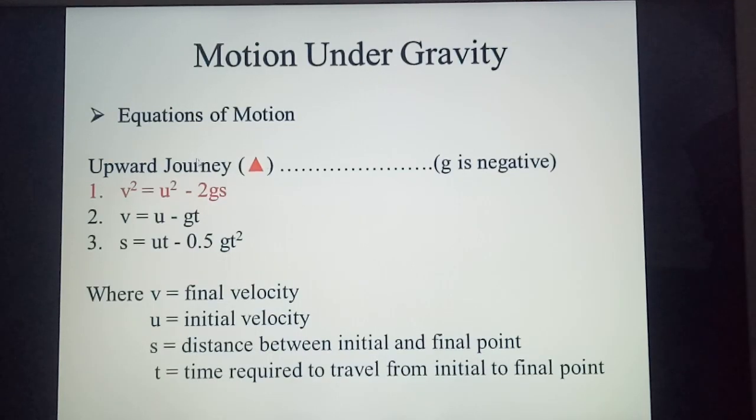So now, to solve this, we have three formulas with us. And as it is an upward journey, g is negative. So out of these three, we will use one. As our aim is to find out the distance s, we have two formulas related to s: v² = u² - 2gs and s = ut - 0.5gt².